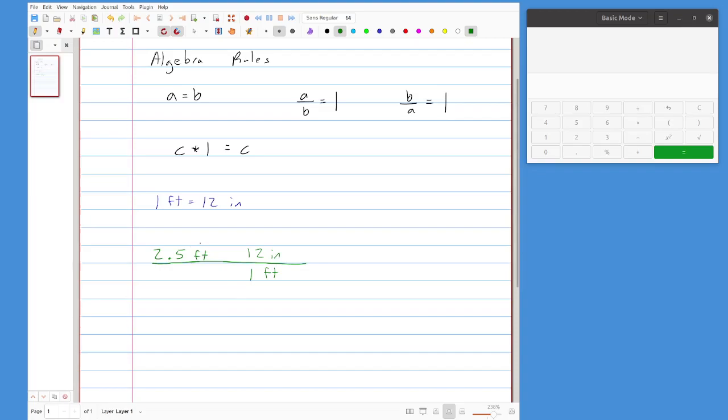So what I have to start with, I need to put my conversion factor on the opposite side of this fraction from what this has. Now when I do that, I can cross off the feet because they cancel each other out. And I'm left with 2.5 times 12 inches over 1.